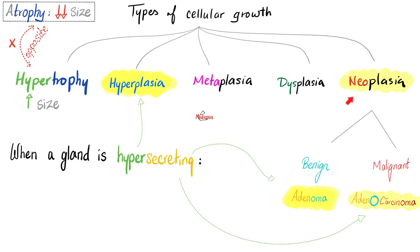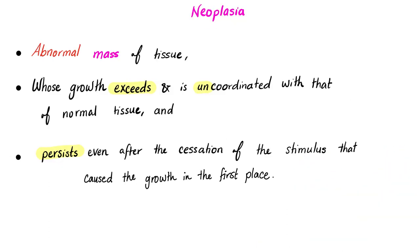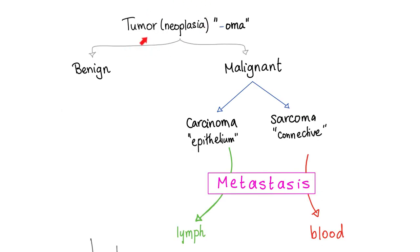Remember that neoplasia can be divided into benign tumors and malignant tumors. Neoplasia is defined as an abnormal mass of tissue whose growth exceeds and is uncoordinated with that of normal tissue, and it persists even after the cessation of the original stimulus. Since hematoma is not a neoplasia, we will not put it under this classification.